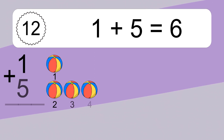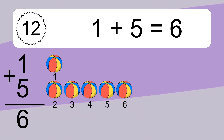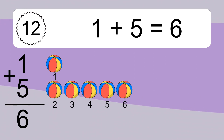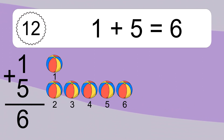1 plus 5 equals what? 1 plus 5 equals 6. Let's count it. 1, 2, 3, 4, 5, 6.